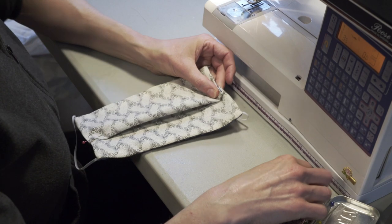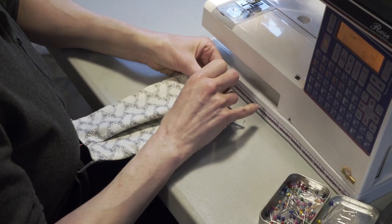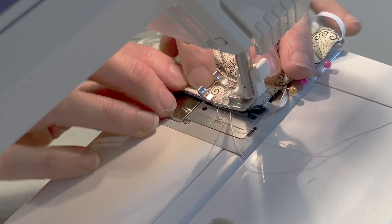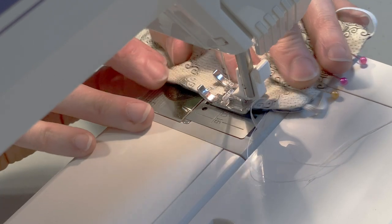Pin the pleats in place and topstitch the entire thing, again making sure to stitch to the left of the wire. You can feel the wire with your finger as you sew.